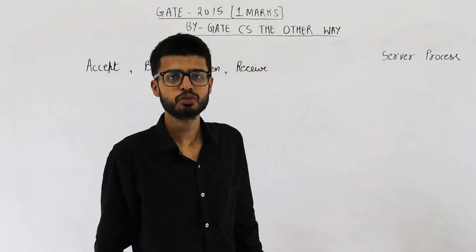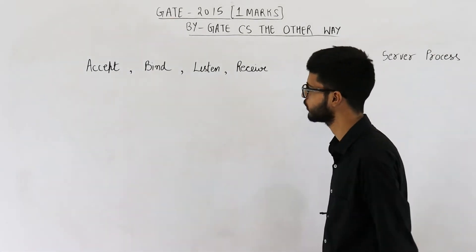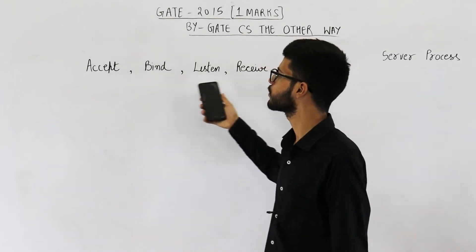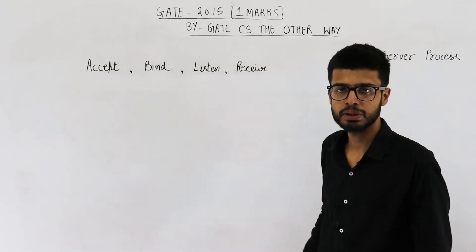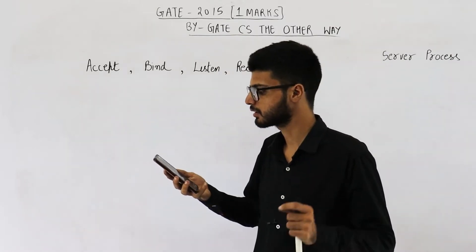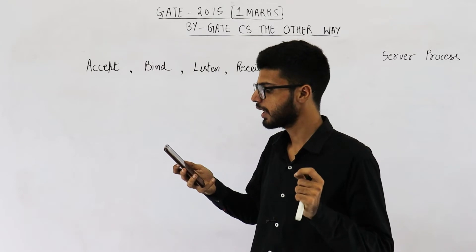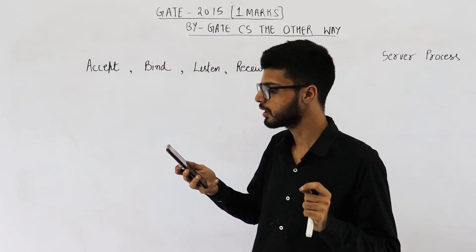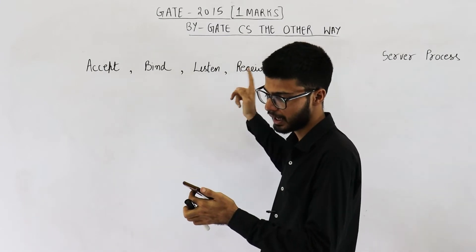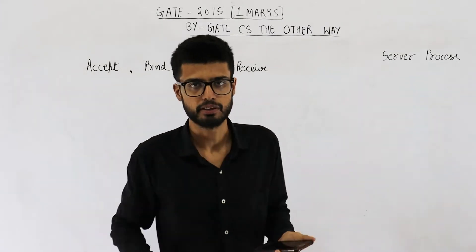Hello students, welcome back. The question is from GATE 2010 exam and is for one mark. They're asking in what order will these four system calls be executed by a server process? Identify the correct order in which a server process must invoke the function calls: accept, bind, listen, and receive according to Unix API.